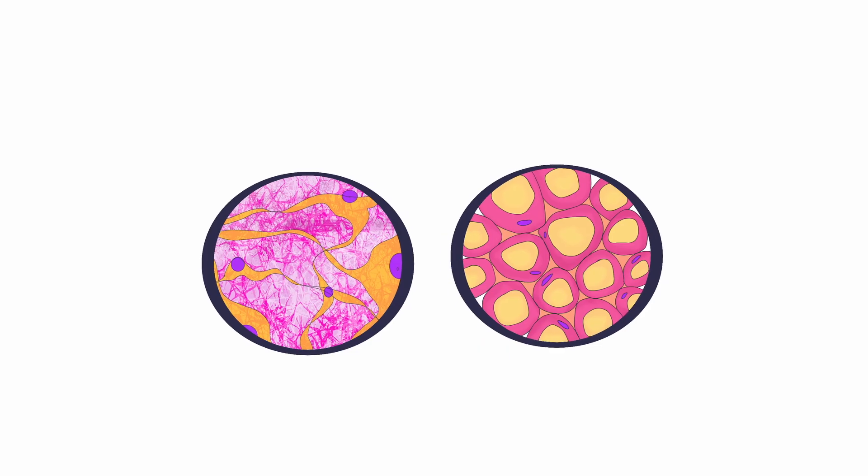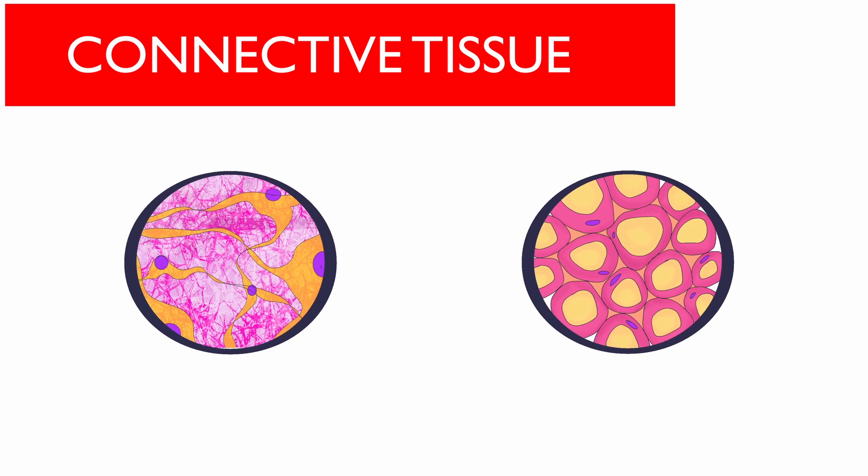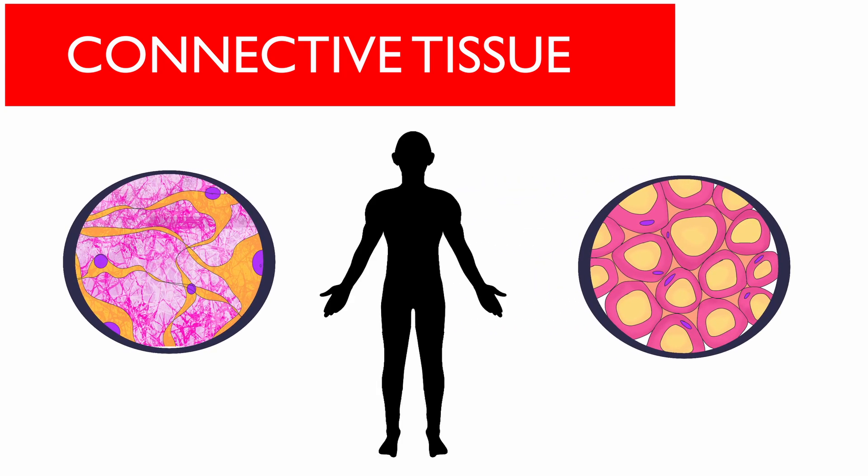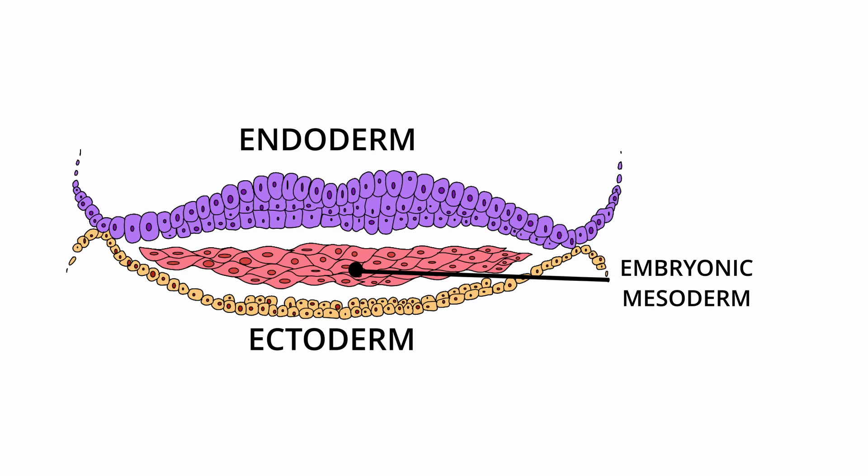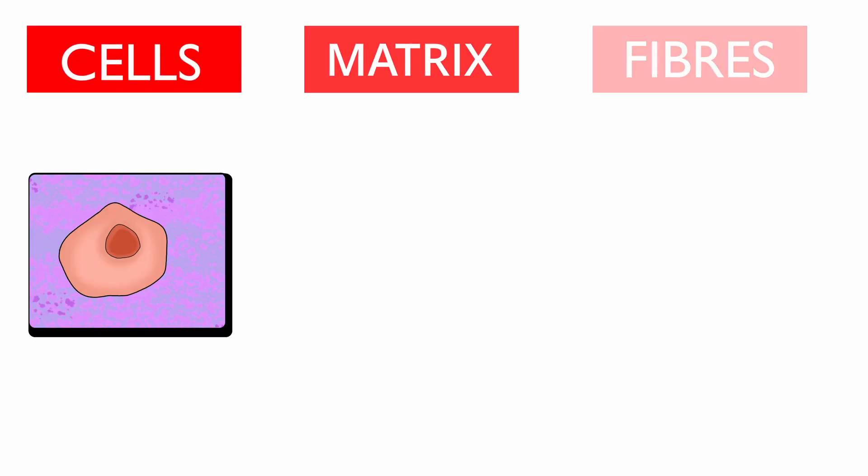Connective tissue is the most abundant animal tissue, and its purpose is to provide a structural framework for the body. It originates from embryonic mesoderm, the layer between the endoderm and the ectoderm. All types have three components: cells, matrix, and fibers.